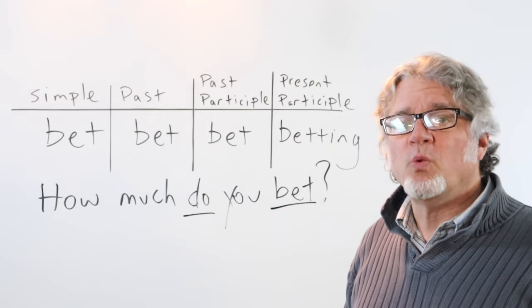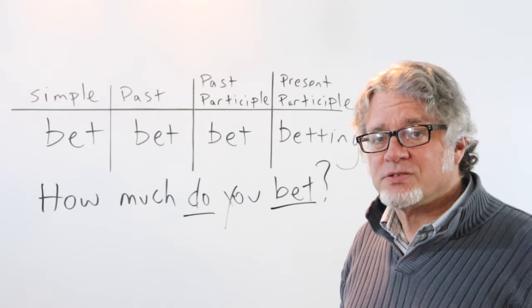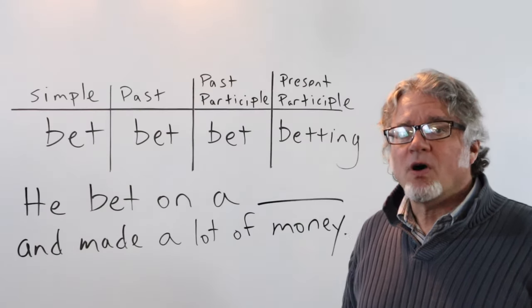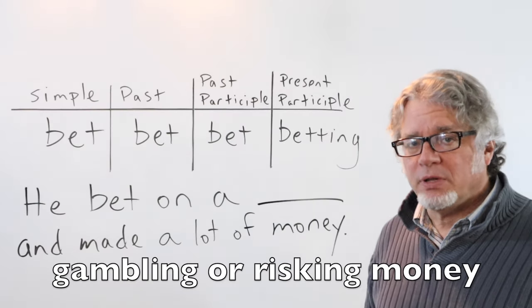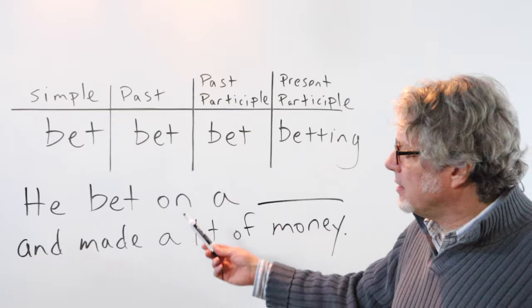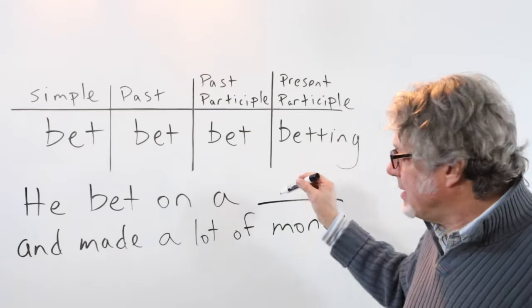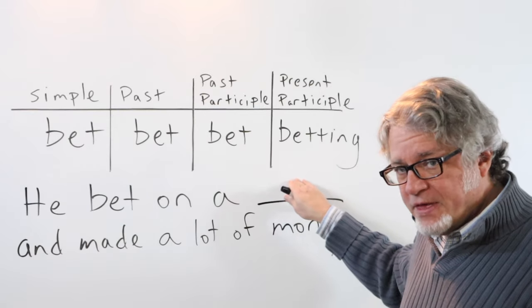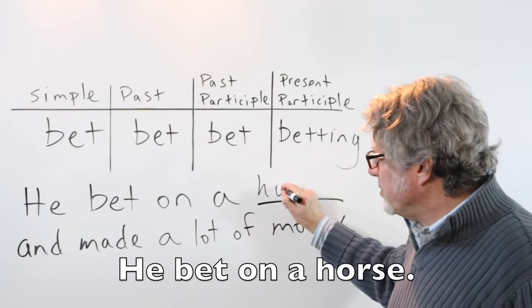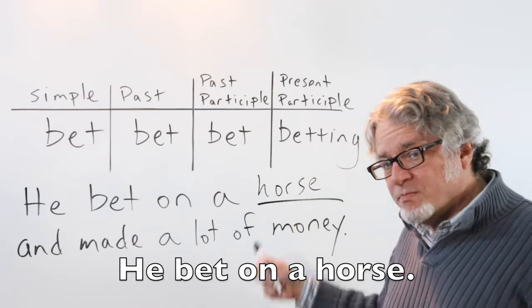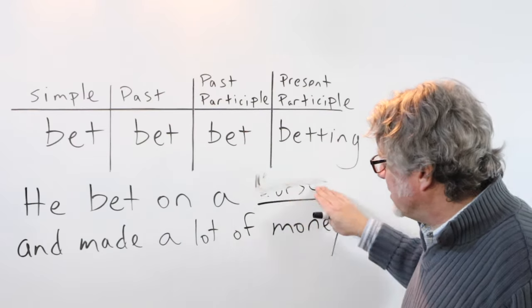You can also use it when talking about chance. Bet is often used for gambling or risking money. He bet on a horse, for example.